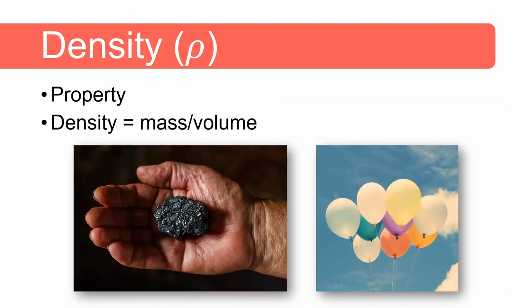Next let's look at density. We said substances have properties we can use to identify and describe them and density is one of these properties. Density can be calculated by taking the object's mass and dividing it by its volume. The density of a rock is much higher than the density of air in a balloon.